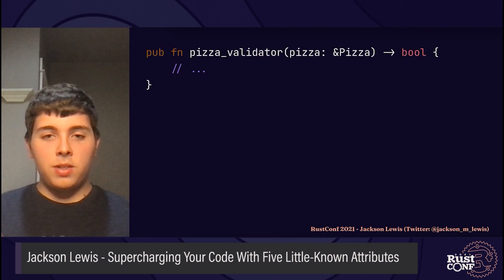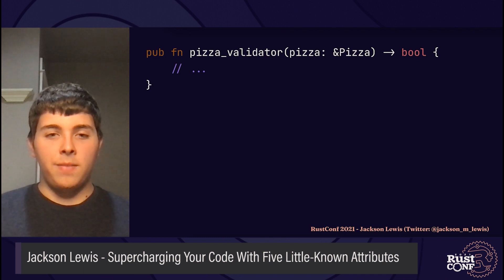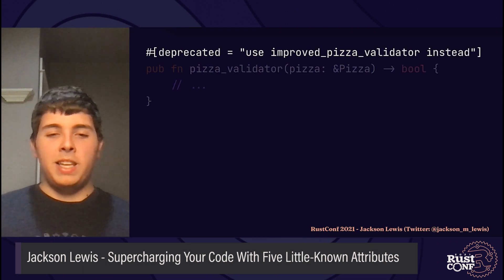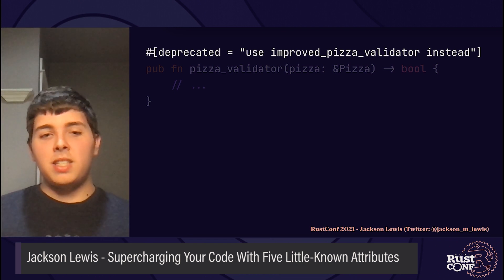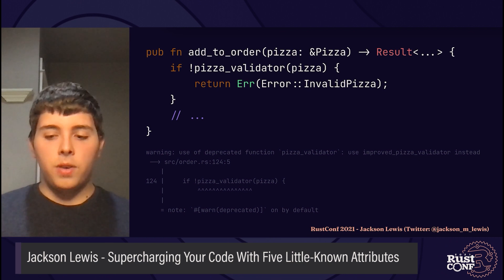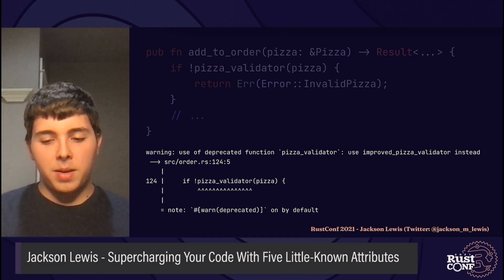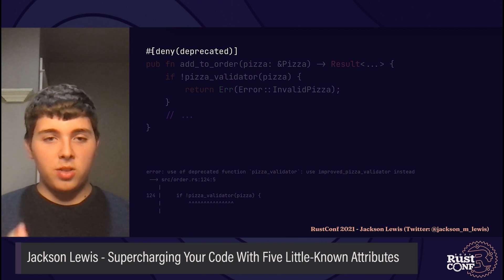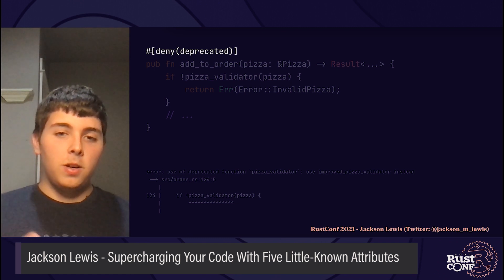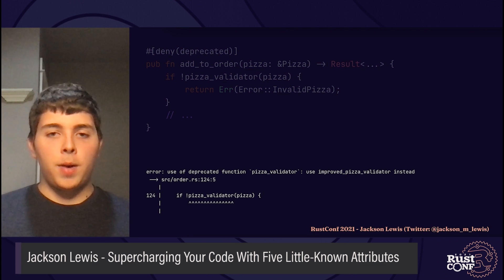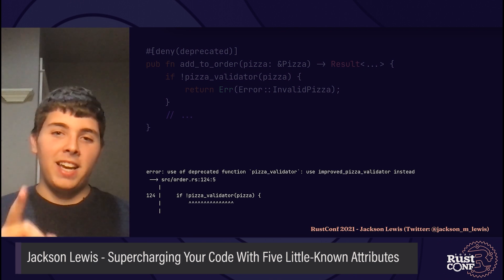It would be nice if we could mark this old function as improper to use without outright removing it, and it turns out that the standard library gives us a way to do this. All we need to do is put the deprecated attribute at the top of the function, and the compiler will emit a warning when someone tries to use it. You can even provide a custom message to go with this warning. And in this case, you don't just want a warning — you want to make sure that using a deprecated function will throw an error for certain parts of your codebase. So if you put a deny(deprecated) attribute at a higher level in the crate, the compiler will make this an error instead of a warning. And that's the power of deprecated.